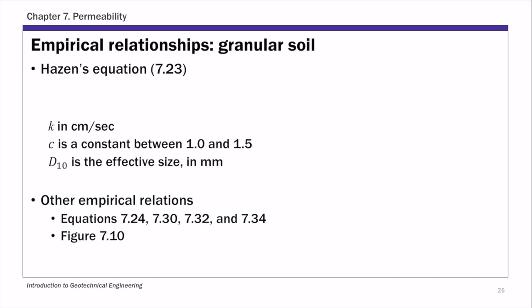So let's start with these empirical relationships. First, let's look at empirical relationships for granular soil. There are many different relationships that exist for granular soil from different studies in the past. The most commonly used one — perhaps the simplest one — is Hazen's equation, which is equation 7.23 in your textbook. This is based on Hazen's observation of flow in fairly uniform sand. In Hazen's equation, hydraulic conductivity k is estimated as a constant C times D10 squared, where D10 is the particle size corresponding to 10% finer on the particle size distribution curve. This D10 is also called the effective size.